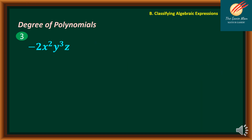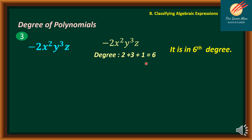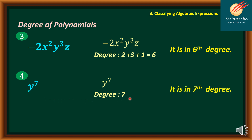For example number 3: negative 2x squared y cubed z — we have only one term but multiple variables. We add the exponents: 2 plus 3 plus 1 (since the exponent of z is 1), so the polynomial is in the sixth degree. On our fourth example, we have only one term with an exponent of 7, so it is in the seventh degree.